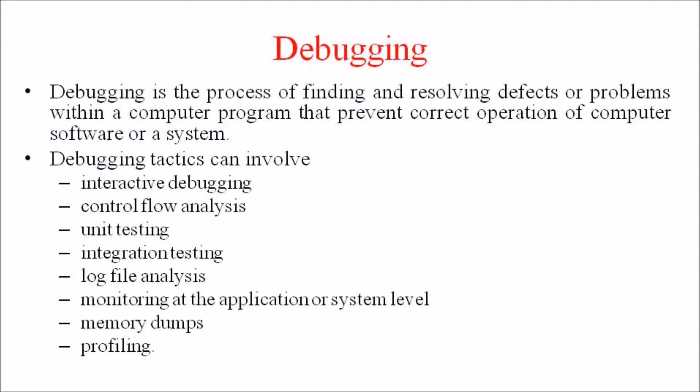Debugging is the process of finding and resolving defects or problems within a computer program that prevent correct operation of the software or a system. This activity begins after the software failed to execute properly and concludes by solving the problems and successfully testing the software. The debugging tactics can involve interactive debugging, control flow analysis, unit testing, integration testing, log file analysis, and monitoring at the application or system level.